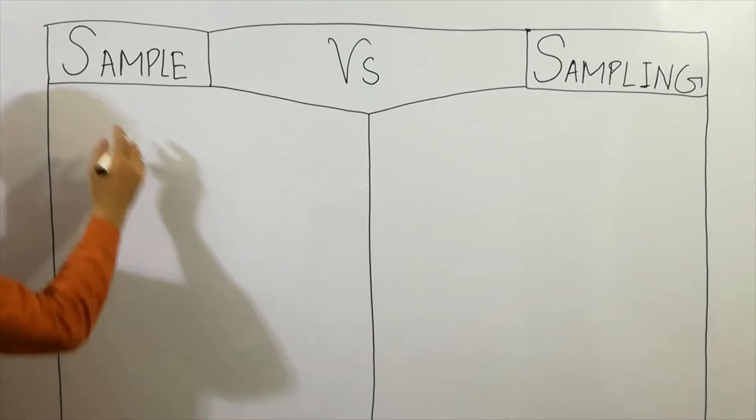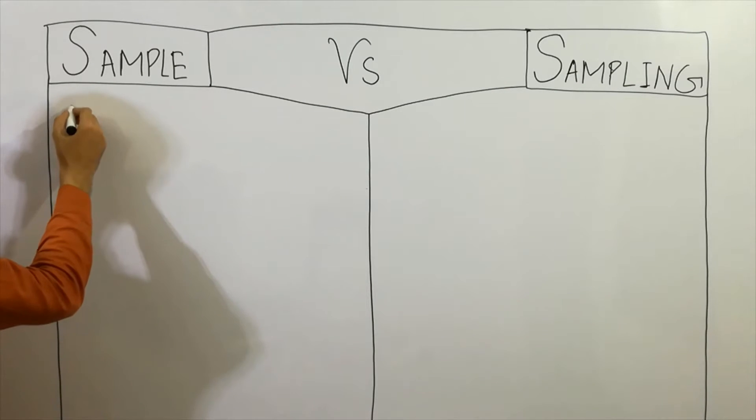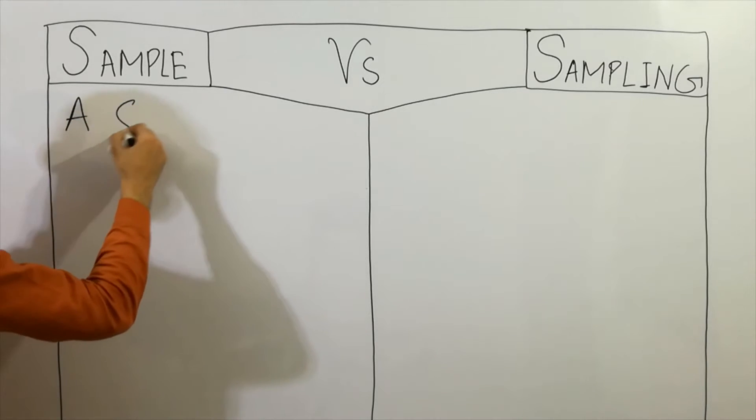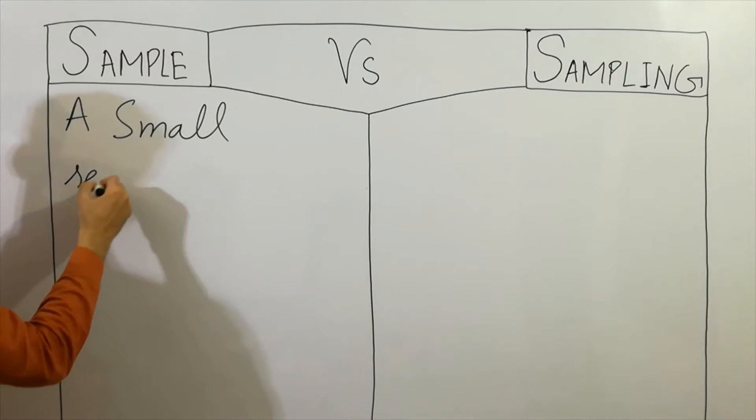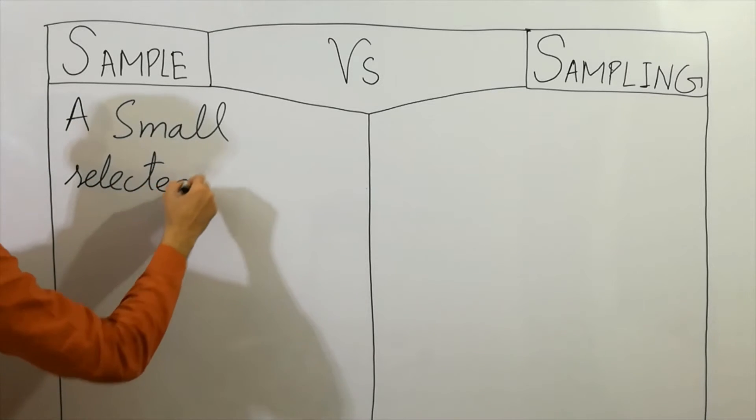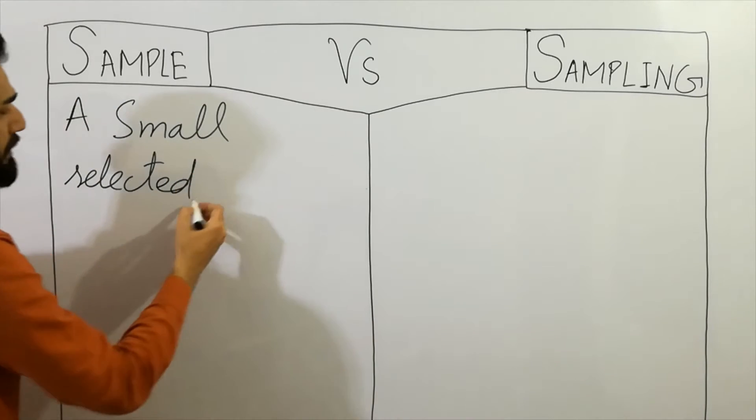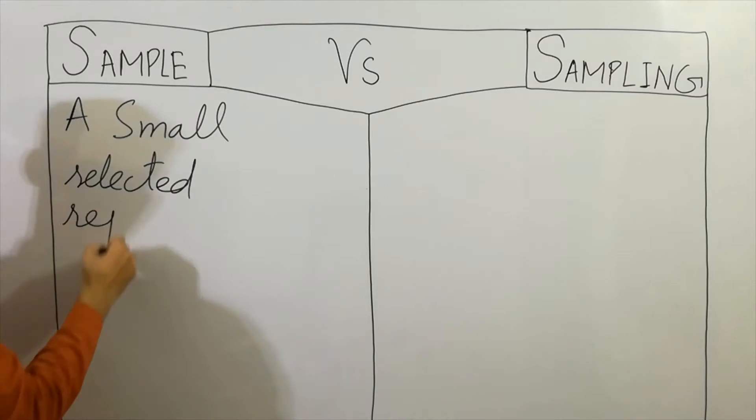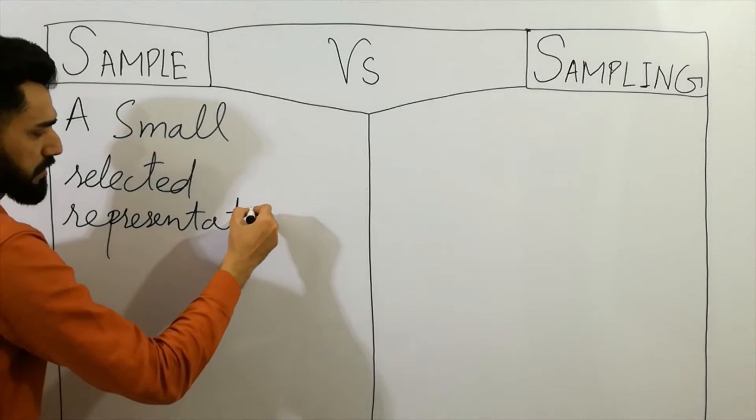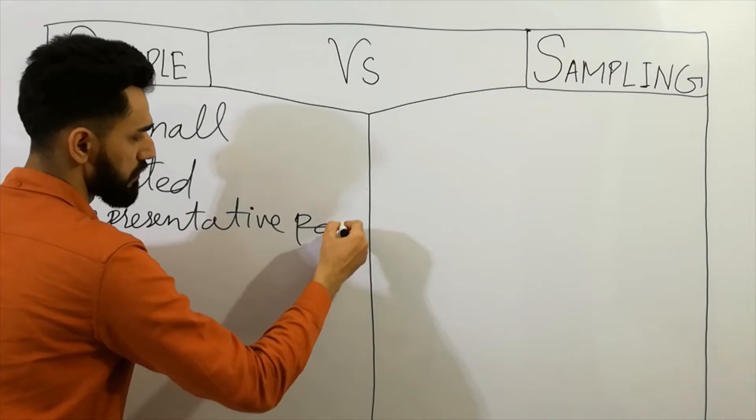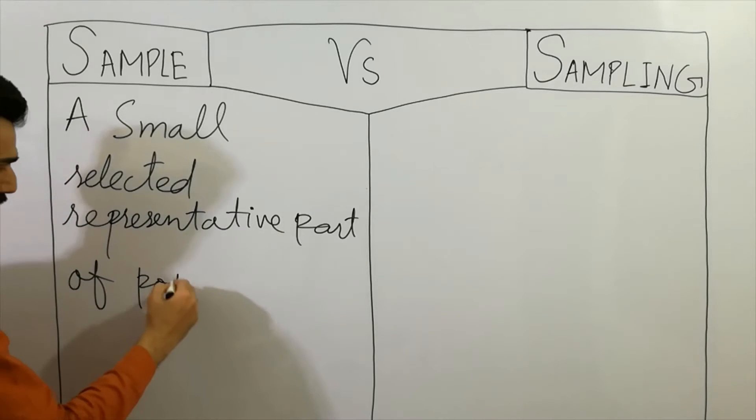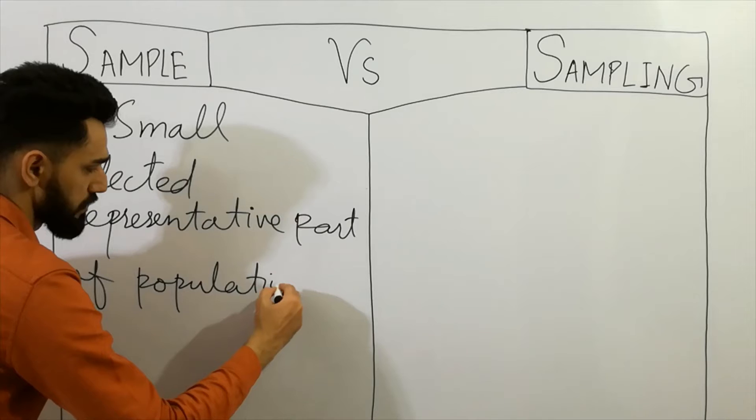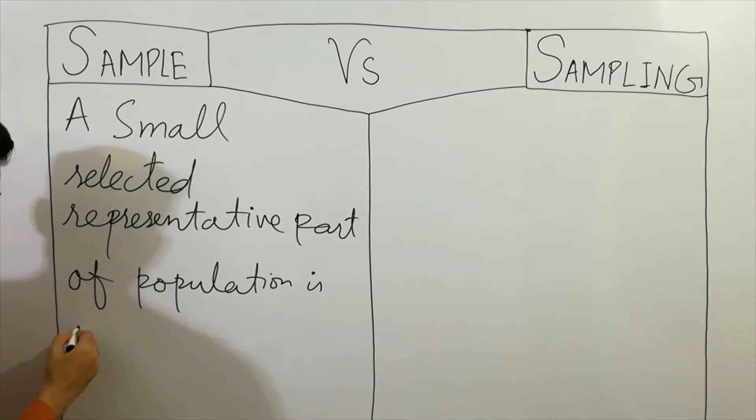So let's discuss now. Very easiest definition: A small selected representative part of population is called as sample.